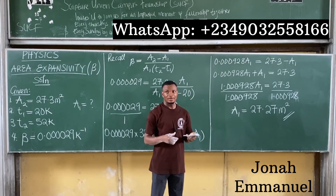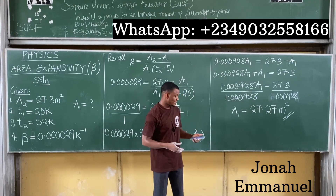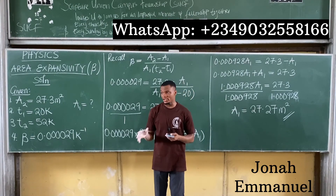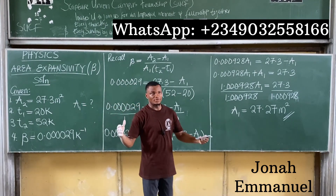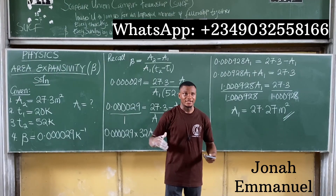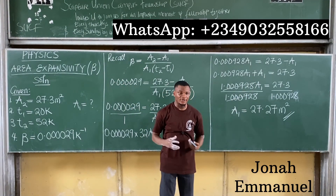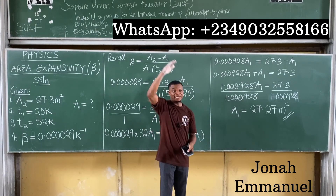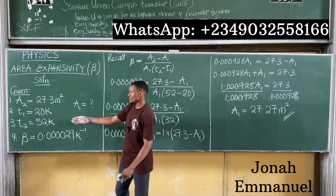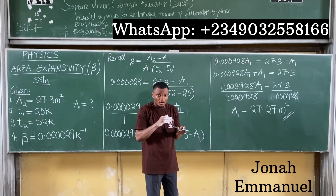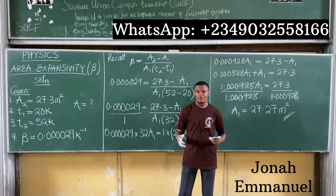So the initial area is 27.27 m². This makes sense because we expect A1 to be less than A2. The area expanded from 27.27 m² to 27.30 m² — the expansion is small but there is still an expansion. This is how we solve this question.